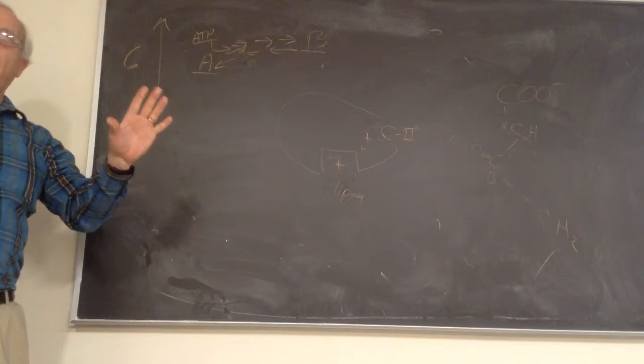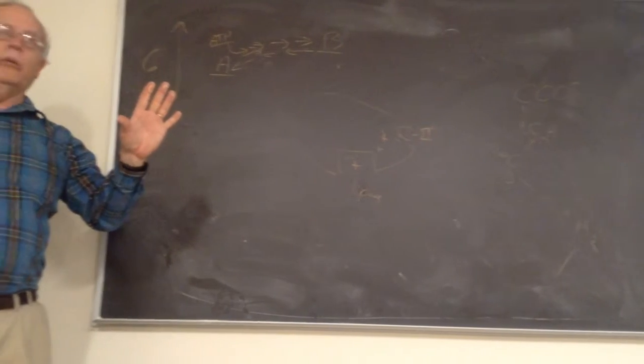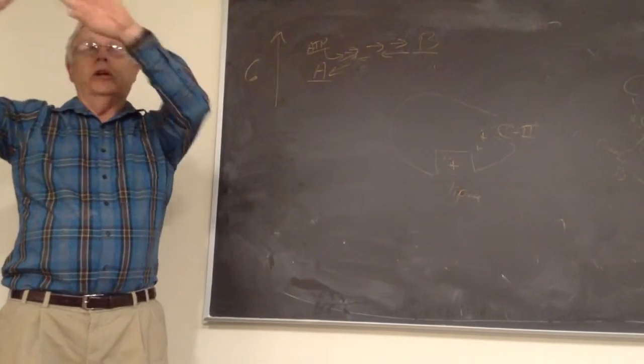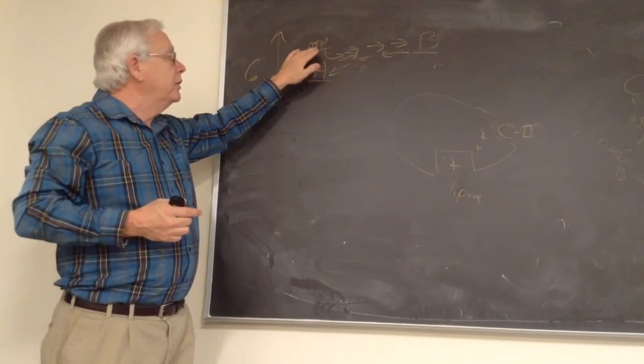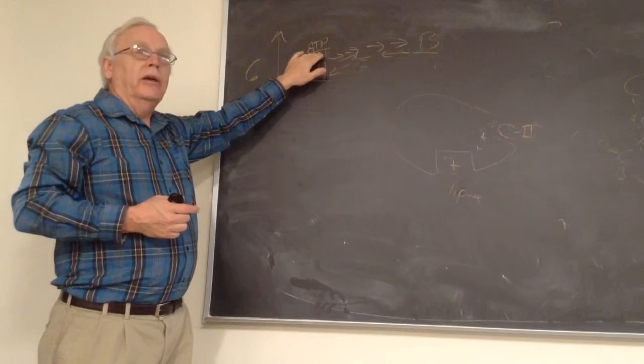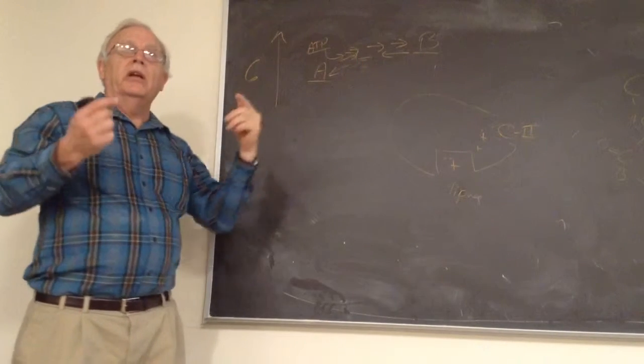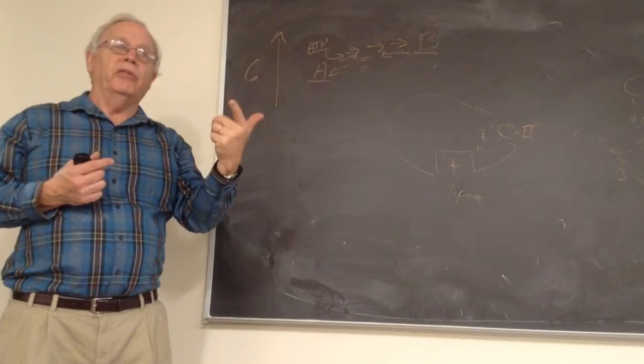You've got two endpoints. At any one point in time, the cell might want to go this way or this way. The cell has set it up with different enzymes, have ATP input where necessary, so that either pathway is thermodynamically favorable.